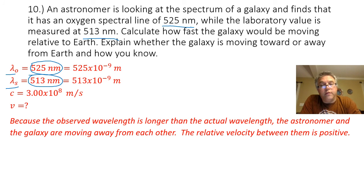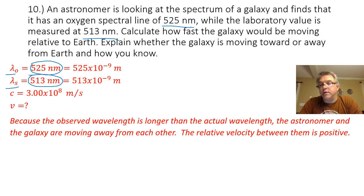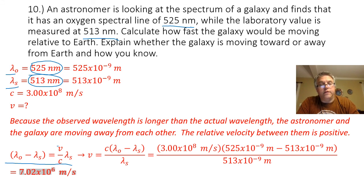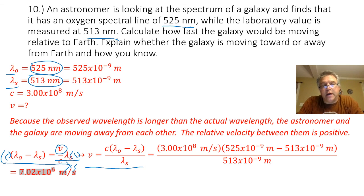Because the observed wavelength is longer than the source wavelength, they are moving away from each other, which means the relative velocity is positive since I am dealing with wavelength. So the astronomer and the galaxy are moving away from each other. Plugging into the Doppler equation for wavelength and rearranging to solve for velocity — multiplying both sides by C and dividing both sides by lambda sub S — I get: V equals C times the quantity lambda sub O minus lambda sub S, divided by lambda sub S.